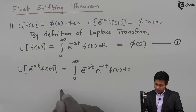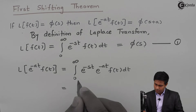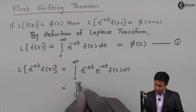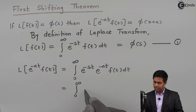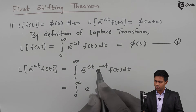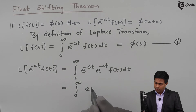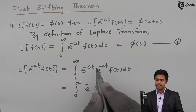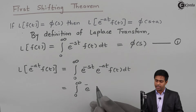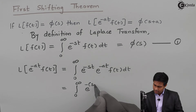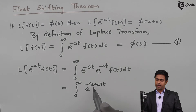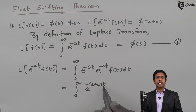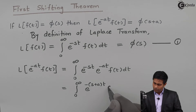Now here we will get integration from 0 to infinity. These two exponential terms will combine — powers will add — so the minus sign is common and in the bracket we get st plus at. Taking t outside the bracket, we get e raised to minus (s+a)t into f(t) dt.